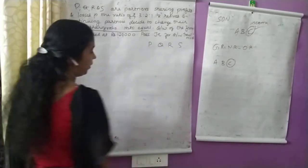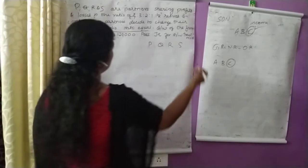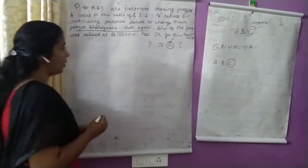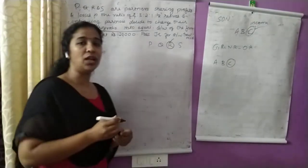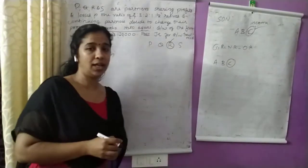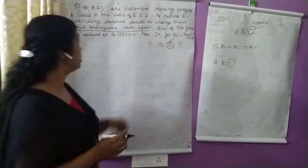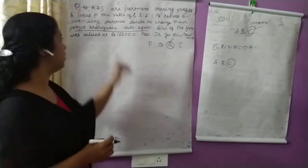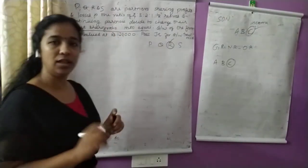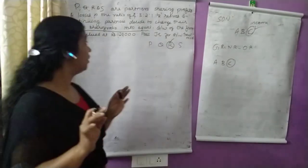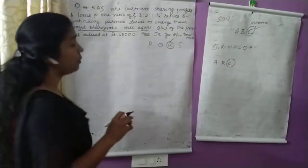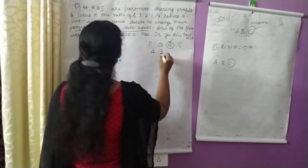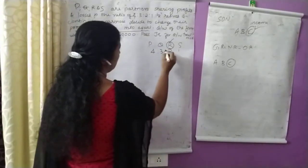I have 4 partners. R and S retire. The new profit sharing ratio is equal. Goodwill of the firm is valued at Rs. 1,20,000. The old ratio is 4:3:2:1, so the total is 10. The old ratio for P is 4 by 10, for Q is 3 by 10.